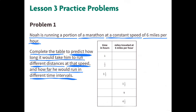Number 1. Noah is running a portion of a marathon at a constant speed of 6 miles per hour. Complete the table to predict how long it would take him to run different distances at that speed, and how far he would run in different time intervals.